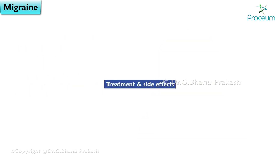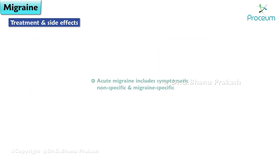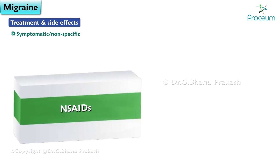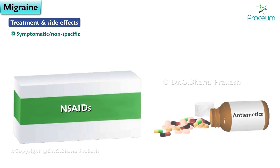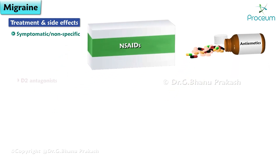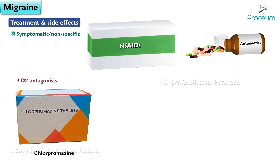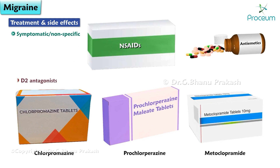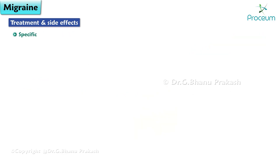Treatment of acute migraine includes symptomatic, non-specific, and migraine-specific approaches. Symptomatic measures include analgesics, NSAIDs, and antiemetics for vomiting. Dopamine is thought to be increased in migraine, hence D2 antagonists like chlorpromazine, prochlorperazine, and metoclopramide are also used during an acute attack — they also act as antiemetics.